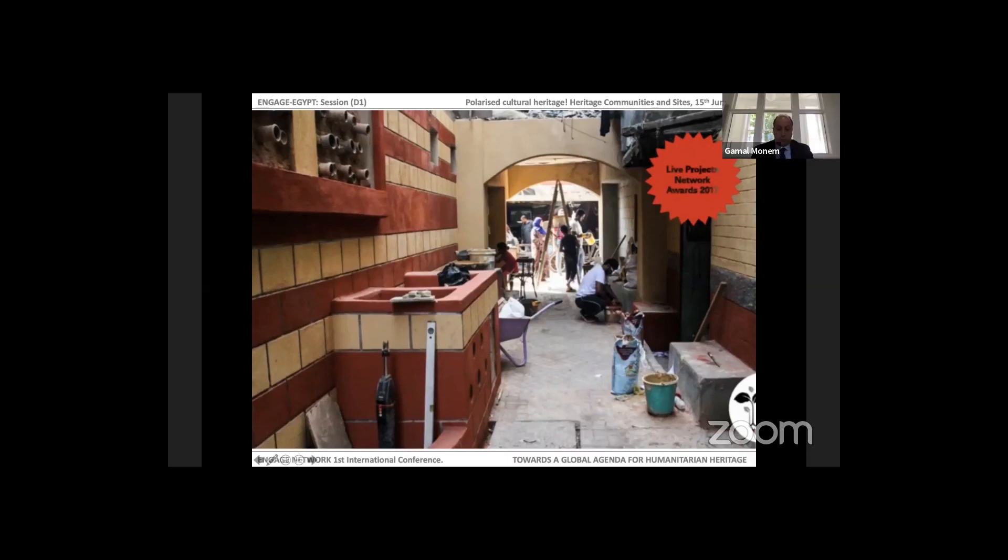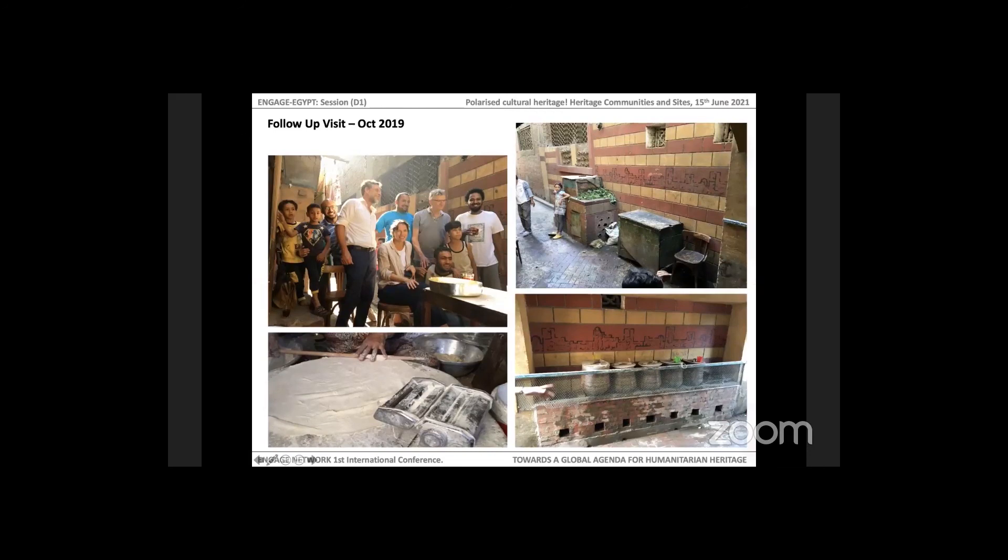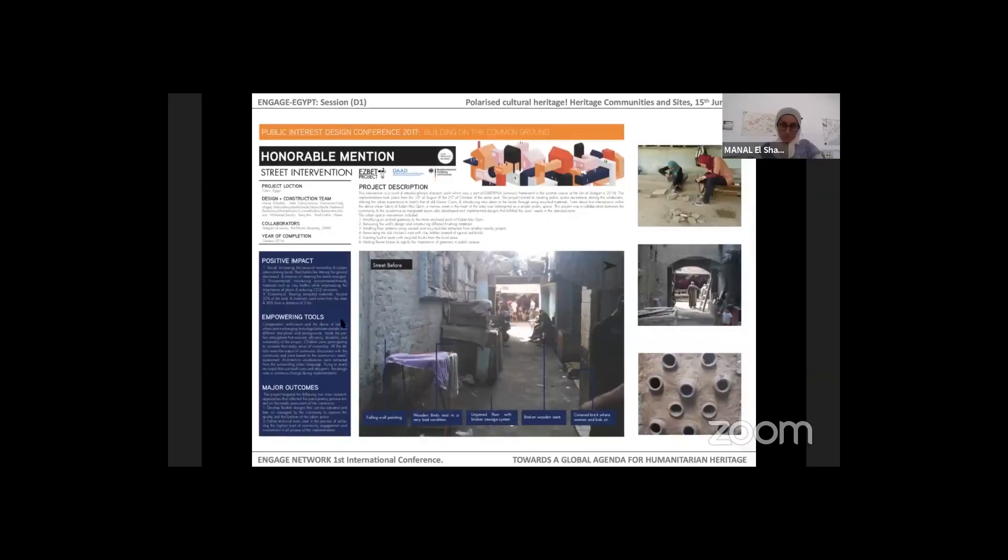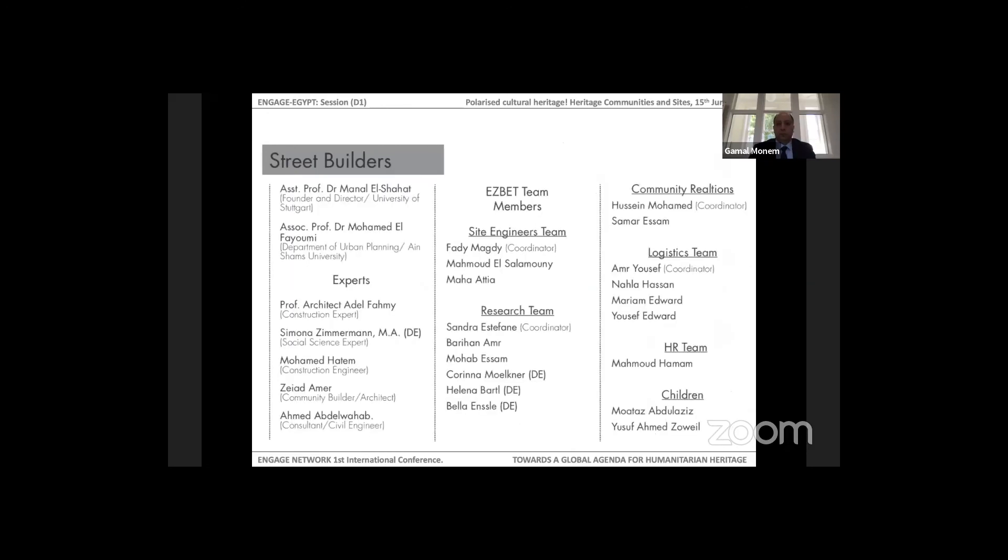The project received in 2017 an honorable mention from Live Projects Network and Seed Awards for its participatory process and for the upgrading concept of the urban space of slums. A follow-up visit, for example here in October 2019, is showing how the locals changed the different street elements and street furniture. These are our street builders from the community, not all of them but part of the community members who were participating in the whole project, but also from the academics.